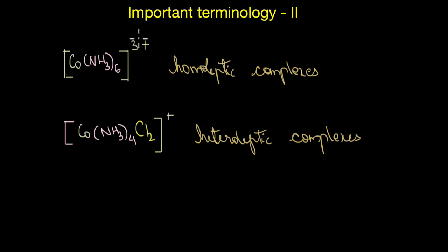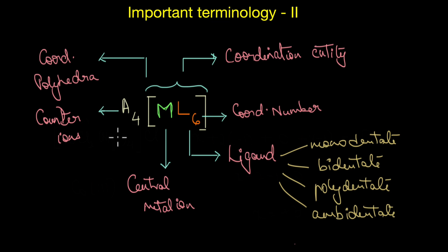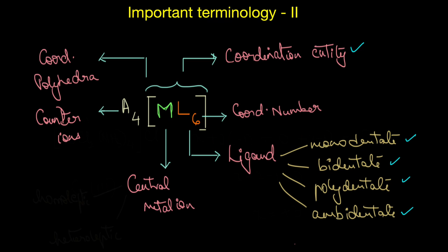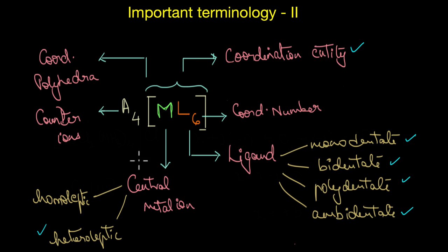To summarize: in a coordination complex, the coordination entity is ML₆, where M is the central transition metal atom or ion, A refers to the counter ions, and L refers to ligands — which can be anionic or neutral, and monodentate, bidentate, polydentate, or ambidentate. If the metal is attached to only one type of ligand it is homoleptic; more than one type gives a heteroleptic complex. The coordination number determines the coordination polyhedra: six ligands gives octahedral geometry, while four ligands gives square planar or tetrahedral geometry.